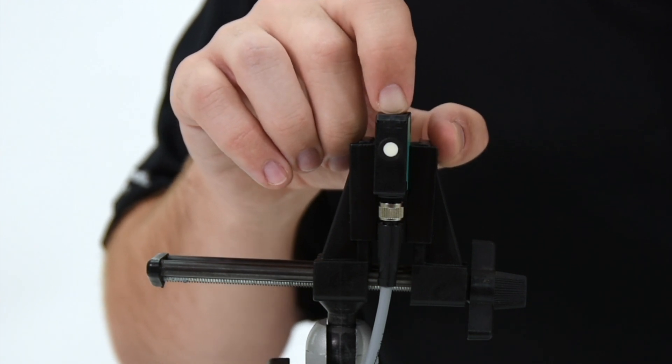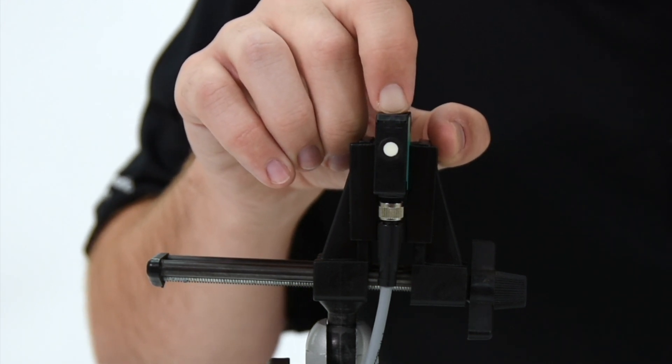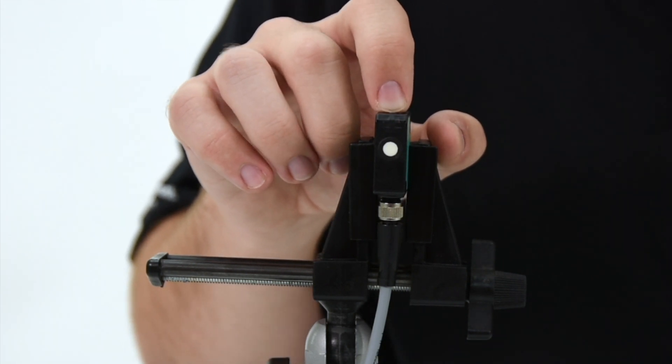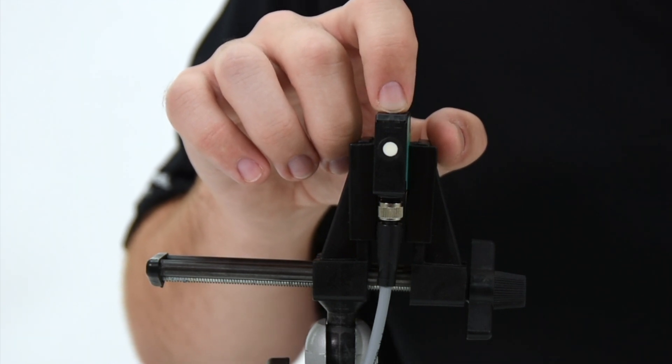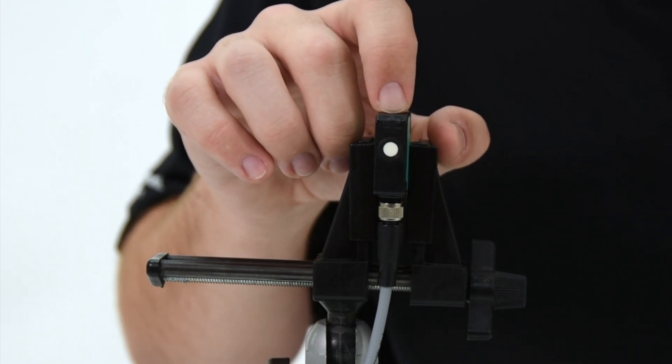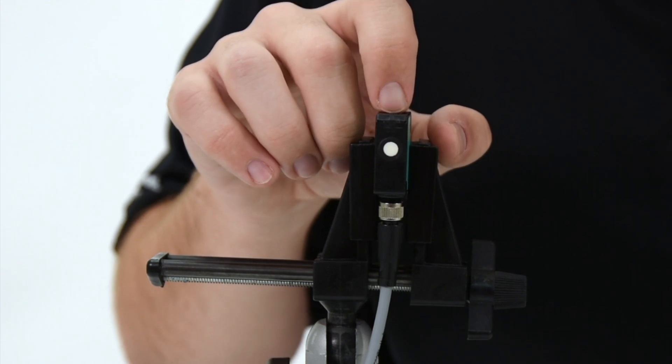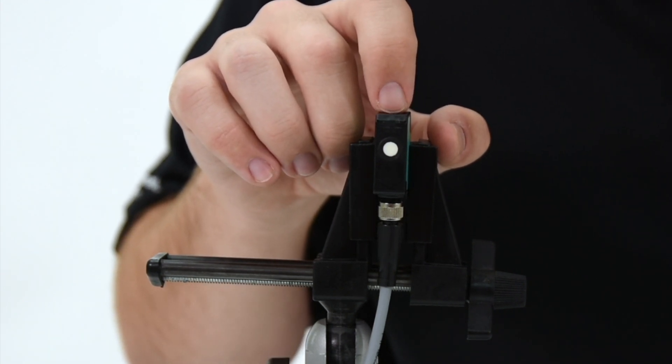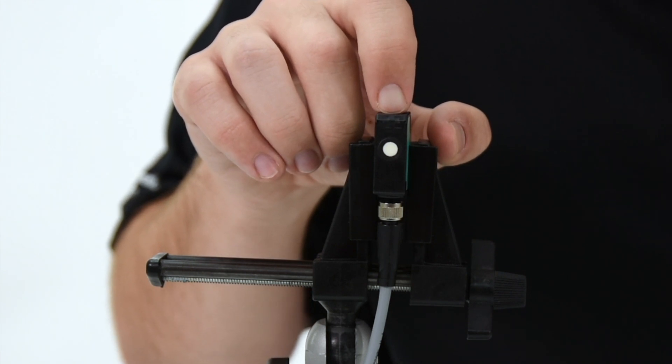To move on, hold the button for two seconds. Now that it is flashing yellow, we can select the output logic for the sensor. One flash indicates normally open, and two flashes indicate normally closed. To cycle in between, simply press once. To move on, we will hold again for two seconds.